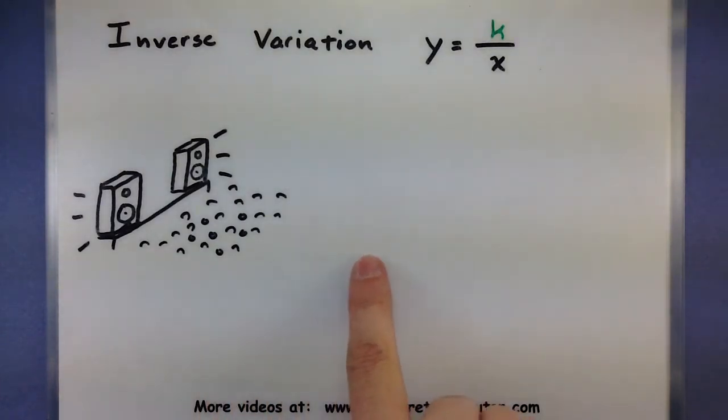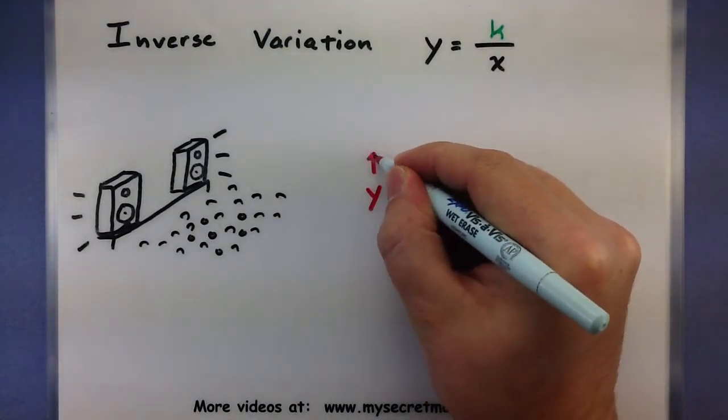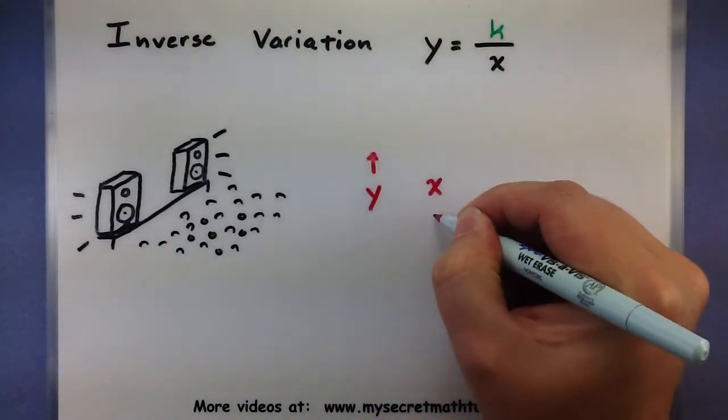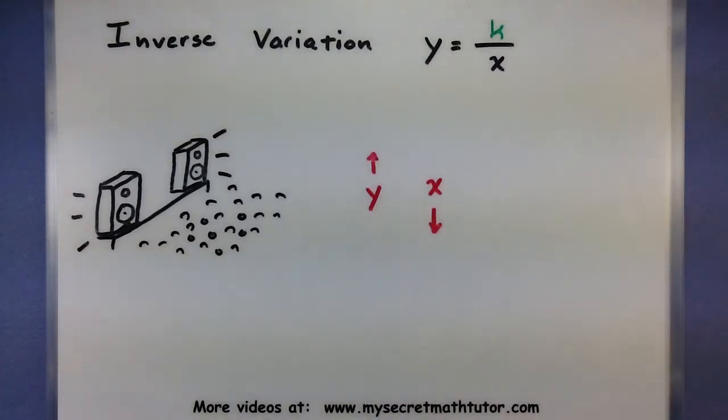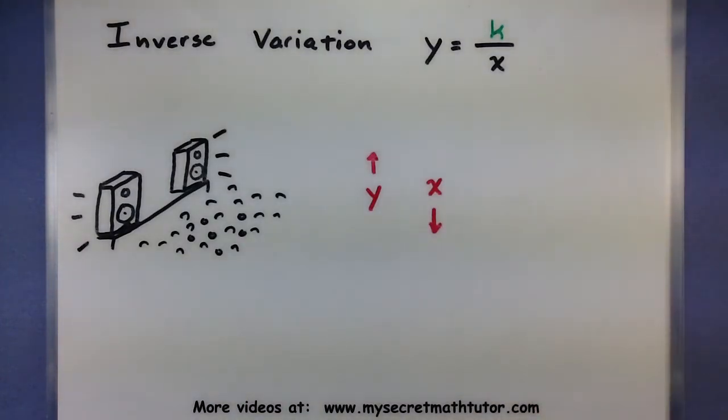But as you get further and further away from the stage and you increase your distance, now it actually sounds less loud. You know, maybe it's actually really quiet when you get all the way into the back of the entire stadium. So in this one, if one variable goes up, then the other one is going to go down. They're going to work in opposite directions for inverse variation. And again, the k's job in all of this is to really fix how much they actually move.